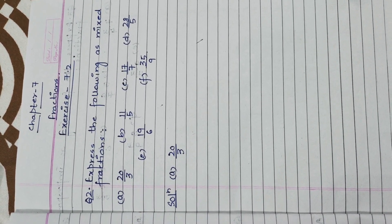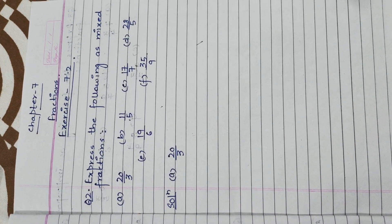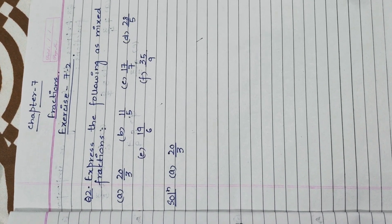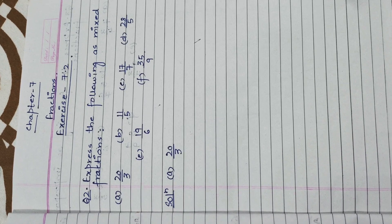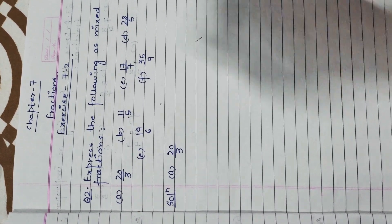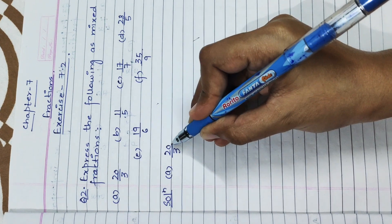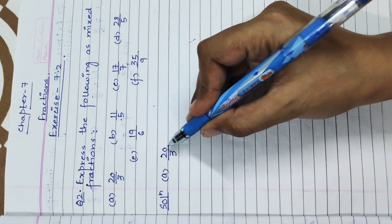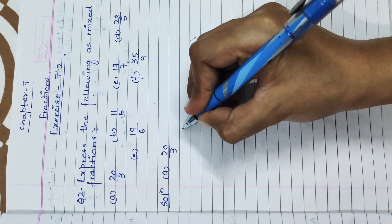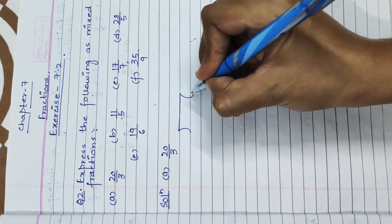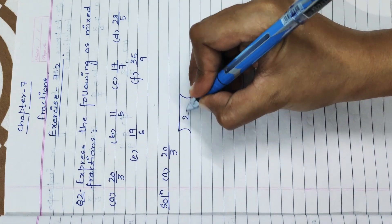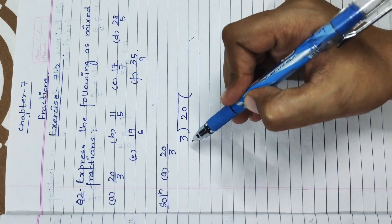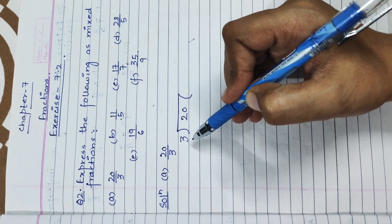We are going to convert these fractions into mixed form. There are two steps for converting an improper fraction into mixed form. The first step is to divide the numerator by the denominator. In the given fraction, part A is 20 upon 3 — 20 is the numerator and 3 is the denominator. The numerator goes inside the division and the denominator remains outside.